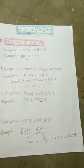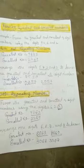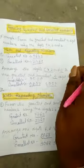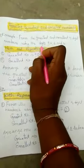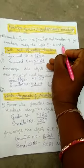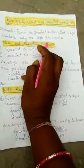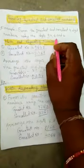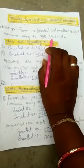Now we are going to learn forming the greatest and smallest numbers. What is the greatest and smallest number? For example: form the greatest and smallest 4-digit numbers using the digits 9, 4, 6, and 2. First, we learn without repeating numbers. For the greatest number, we use descending order.